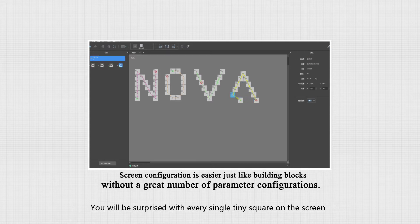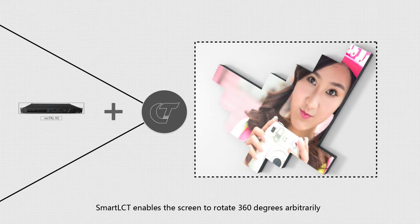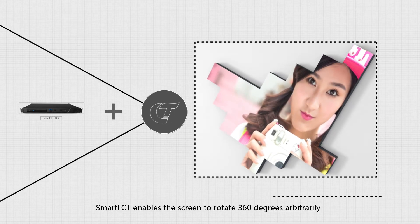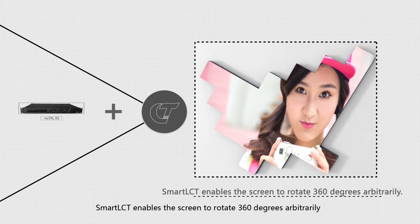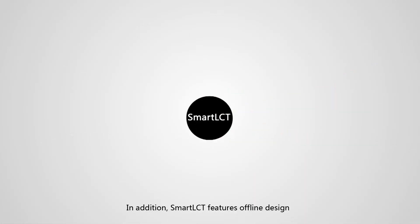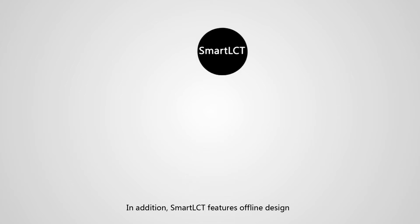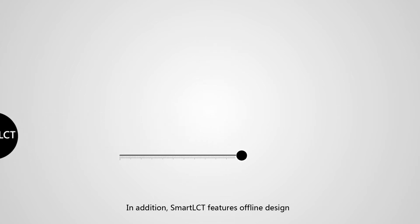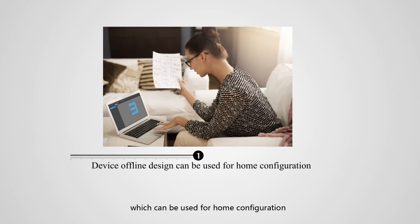You will be surprised with every single tiny square on the screen. Smart LCT enables the screen to rotate 360 degrees arbitrarily. In addition, Smart LCT features offline design, which can be used for home configuration.